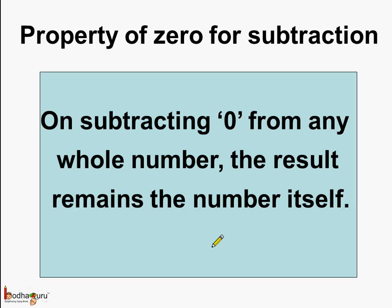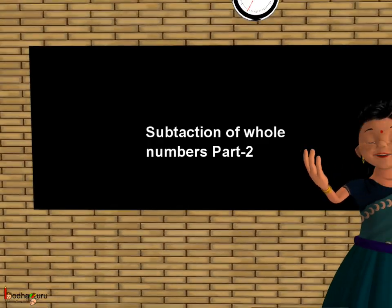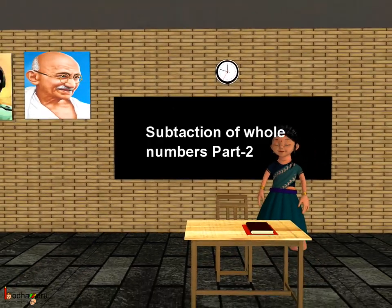Lastly, we saw the property of 0 for subtraction of whole numbers. On subtracting 0 from any whole number, the result remains the number itself — like 3 minus 0 is 3. That's all for today. Bye-bye children.